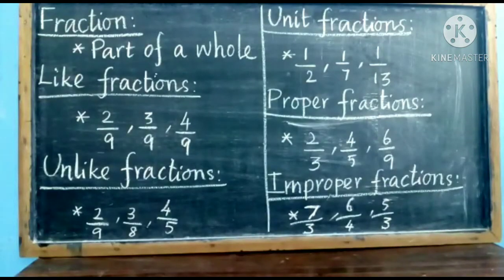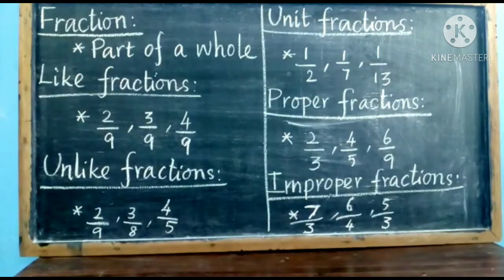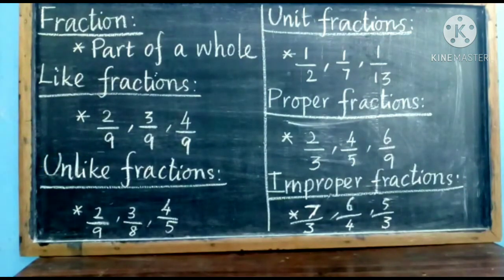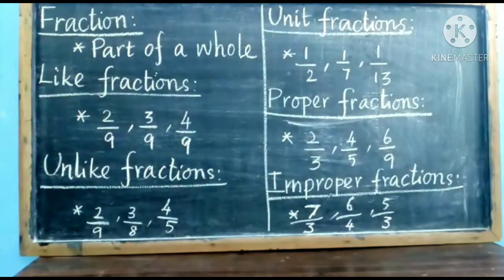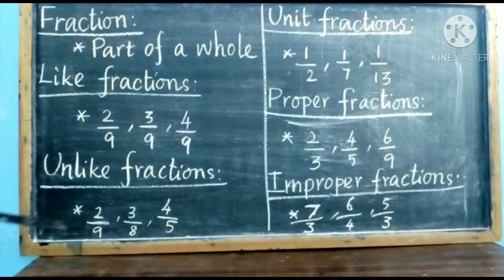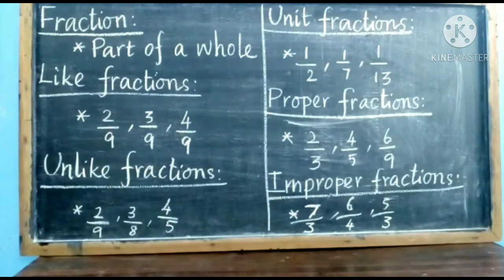Now we are going to learn the types of fractions. From this part onwards you have to start to write in your paragraph. Write today's date and the heading: Chapter 7 — Fraction. The first type is like fractions. Like fractions is nothing but the set of fractions with the same denominator. The denominator is the number at the bottom of a fraction. If the denominators are the same, they are called like fractions — here all the denominators are 9. For unlike fractions, the denominator should be different. Here the denominators are 9, 8, and 5, so they are unlike fractions.